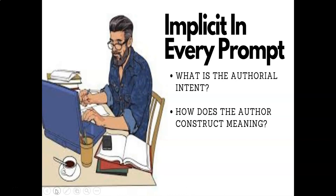Here's a key insight: in every prompt I've seen for rhetorical analysis in the history of the College Board, there's a cheat or hack within the prompt. If students know this, they can pretty much guarantee themselves the thesis — meaning they'll interpret the text properly and correctly. Implicit in every prompt are two questions: what is the authorial intent, and how does the author construct meaning? In my template of the declarative thesis, students always write four sentences for the introduction. When they answer the question 'how does the author construct meaning,' that will constitute the thesis statement.